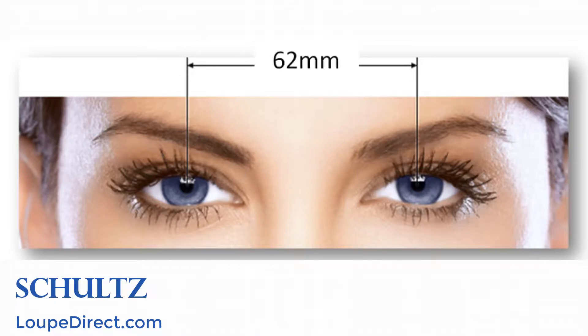To get your exact custom loops, we will need your pupil distance and working distance. The pupil distance, or PD, is the distance between your eyes. Pupil distance is used to ensure the telescopes will be aligned with your eyes perfectly.